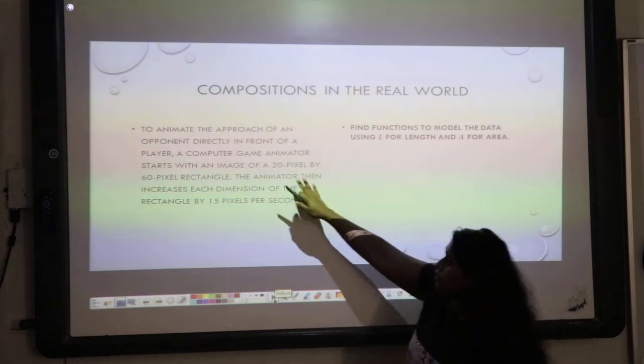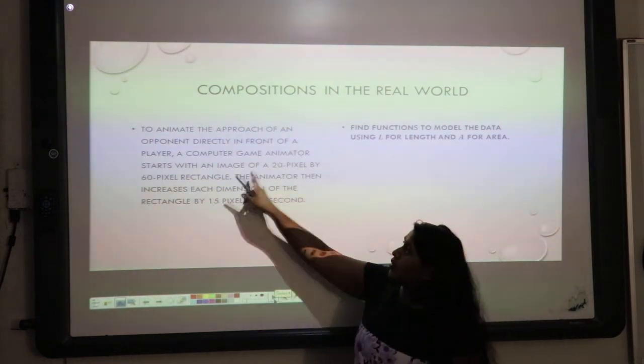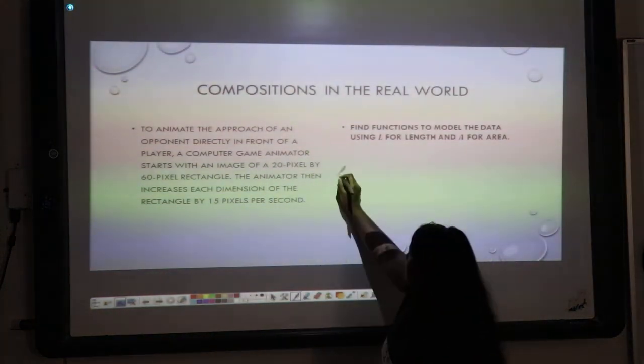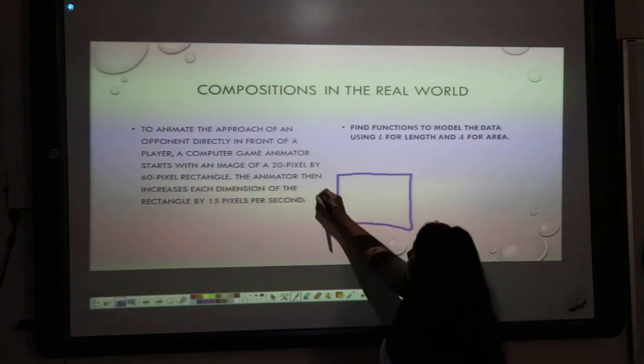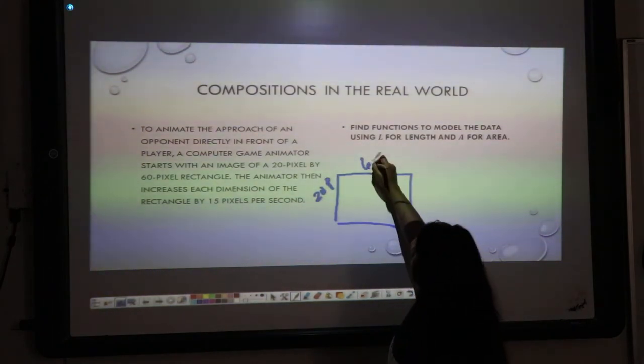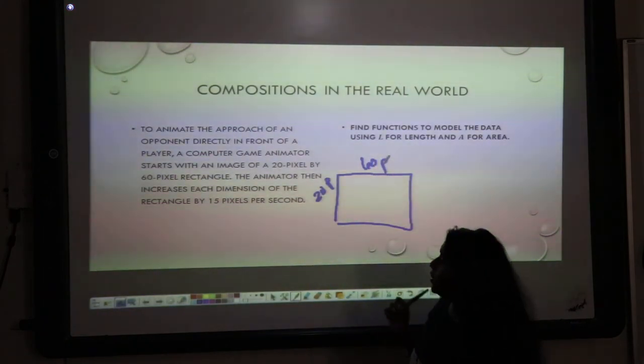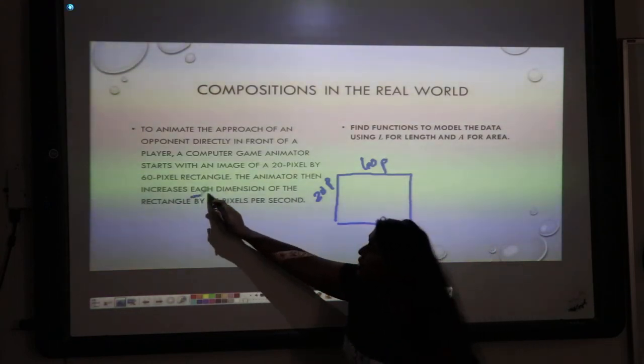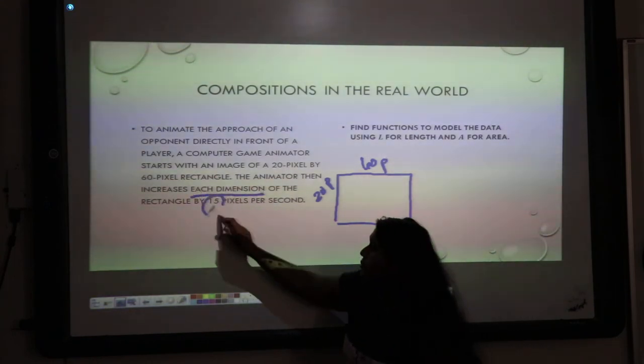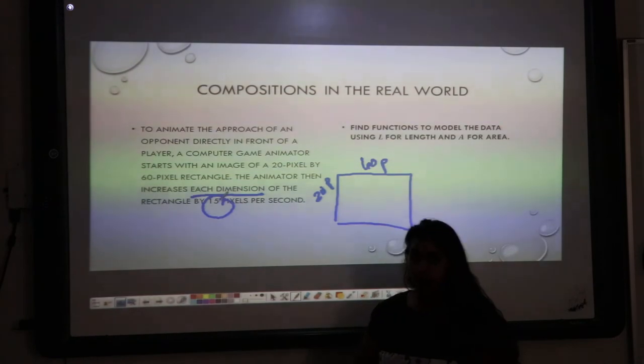All right? First things first, let's look at what we were given. We were given an image that is 20 pixels by 60 pixels, and we know that each dimension is increasing by 15 pixels per second.